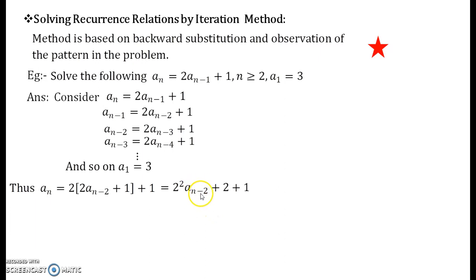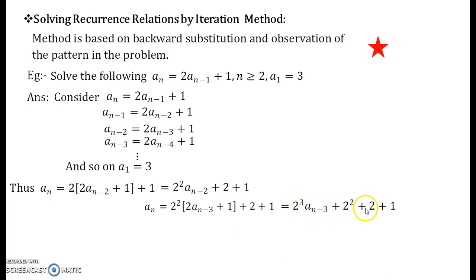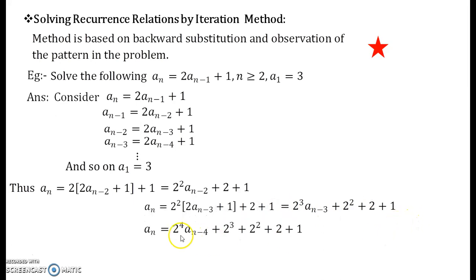Now you have aₙ₋₂. Replace it with its recurrence relation, which is 2aₙ₋₃ + 1. Solving further you get 2³ aₙ₋₃ + 2² + 2 + 1. Again for aₙ₋₃ write it as 2aₙ₋₄ + 1 and multiply 2 inside the bracket. What you get is 2⁴ aₙ₋₄ + 2³ + 2² + 2 + 1.